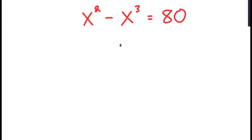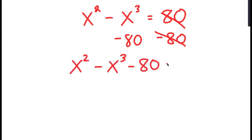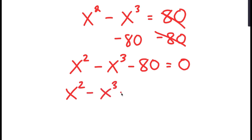To solve this equation, I'm going to first start by subtracting 80 on both sides. So now I get x to the power of 2 minus x to the power of 3 minus 80 is equal to 0. From here, I'm going to replace negative 80 with negative 16 minus 64.